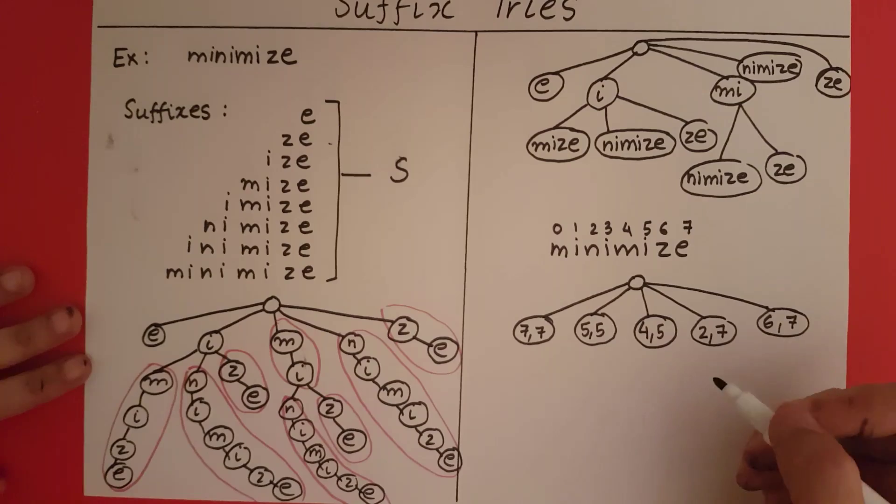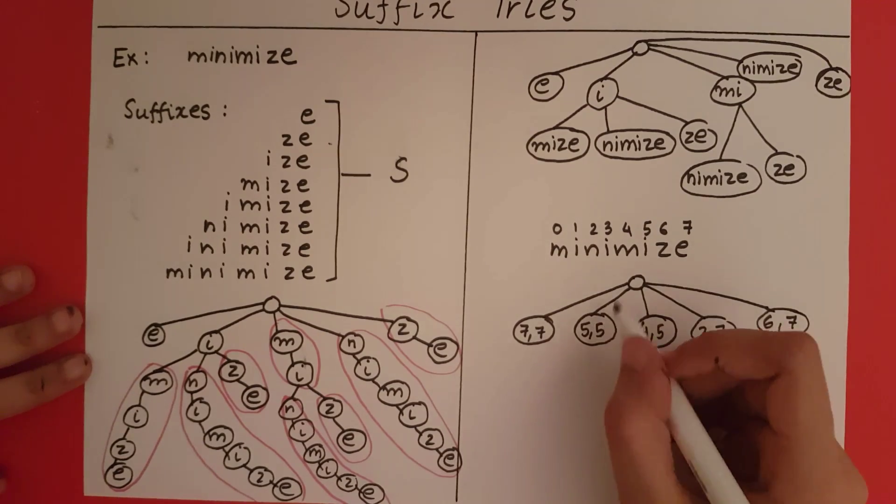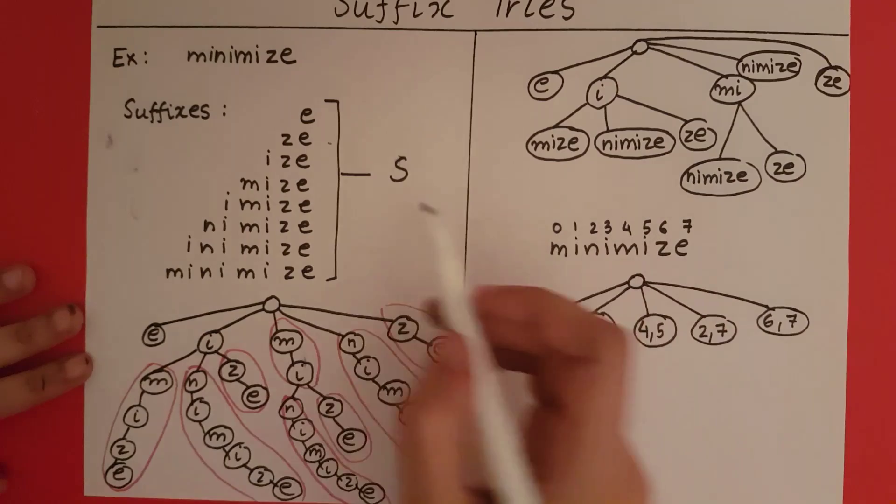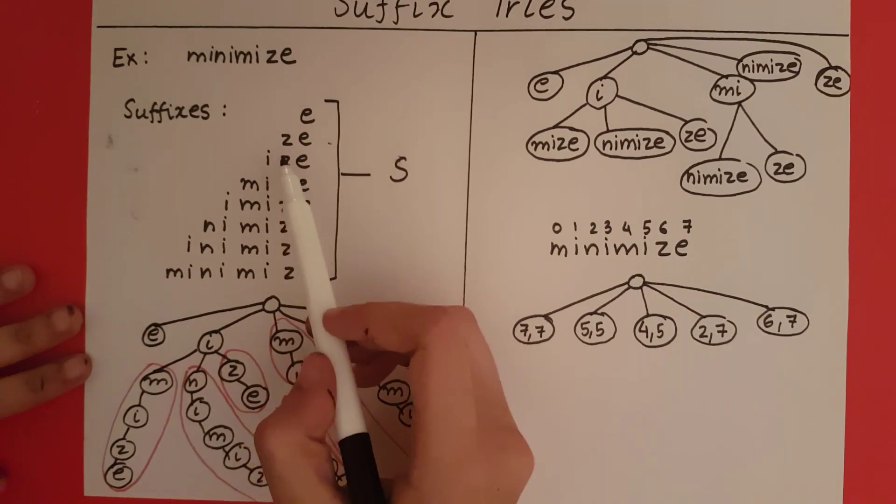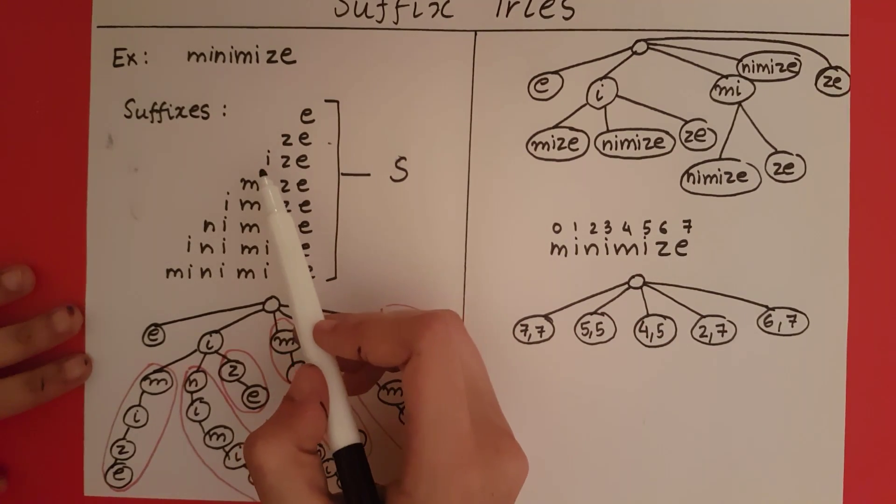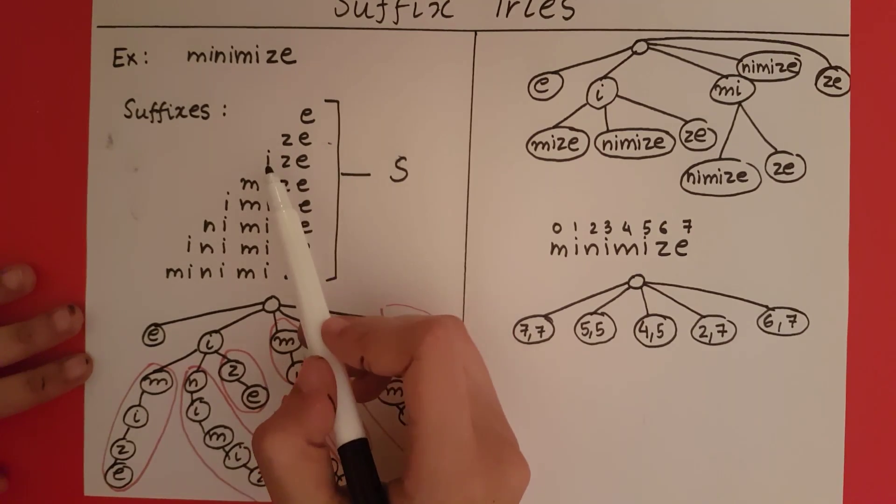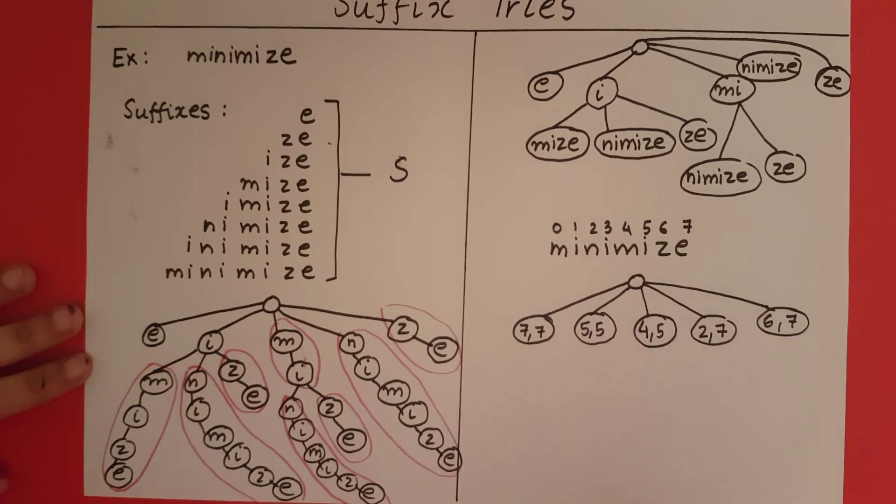Now a question may arise: suppose I have i, why am I taking this i and not that i? Because in our suffix trie we will first come across this ize, so the first time we create an i will be due to this i that is starting at 5 and ending at 5.